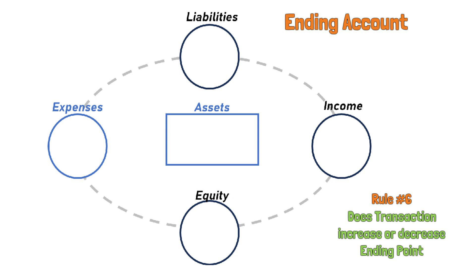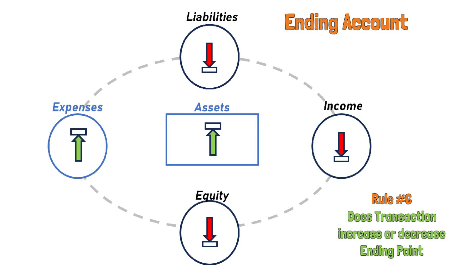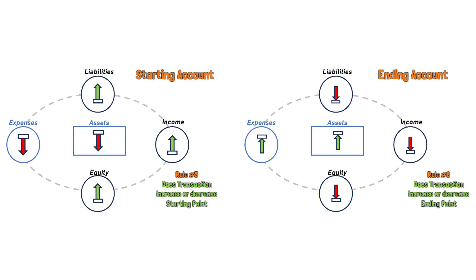Much like rule number five, whether the endpoint account is increased or decreased by the transaction depends on what type of account it is. If your ending account is an income, a liability, or an equity account, then the amount involved in the transaction must be entered as a decrease or reduction to that account. If on the other hand your ending account is an asset or an expense account, then the amount involved in the transaction must be entered as an increase or addition to that account. When we combine the rules for the starting accounts and the ending accounts, we wind up with a combination of rules number five and six that look like this.